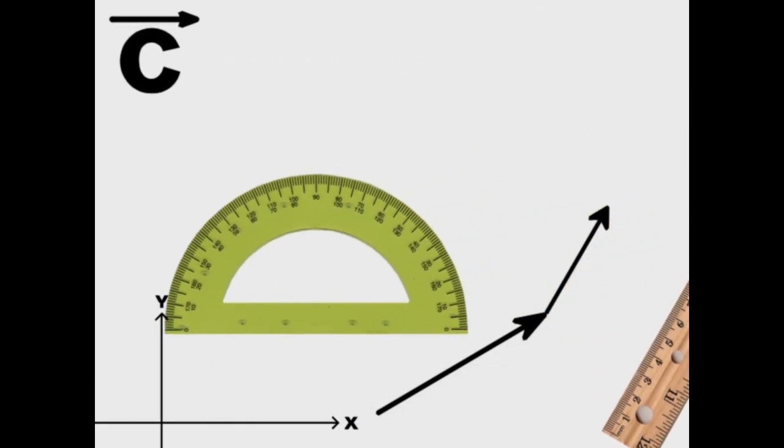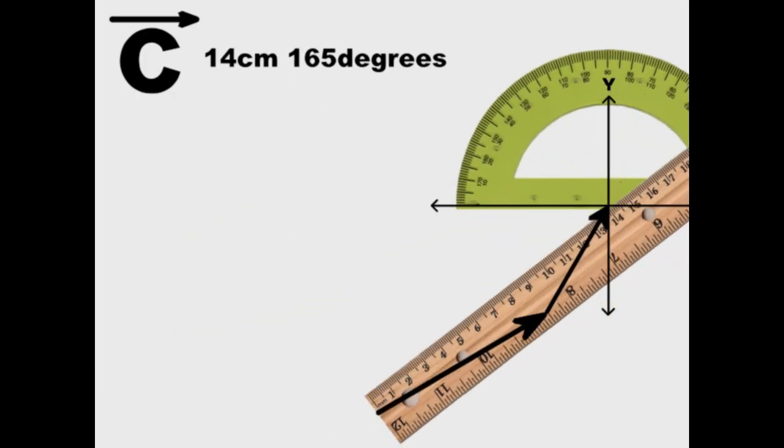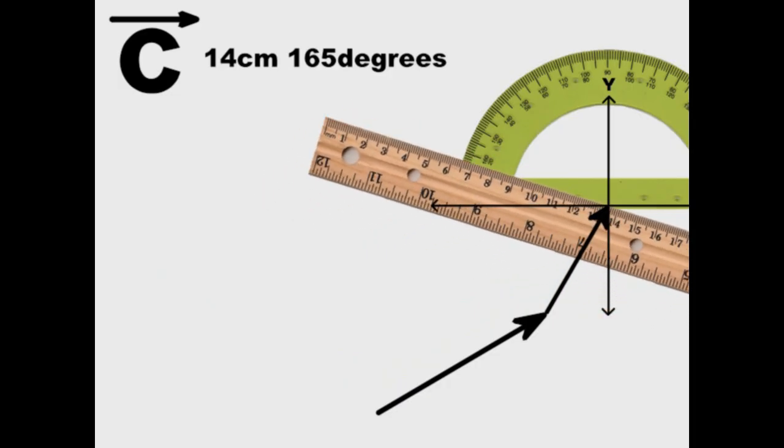Step 4: We draw the next vector starting at the tip of the previous vector. We repeat this step until we use all the vectors.